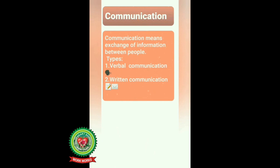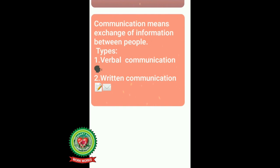Communication has two types: verbal communication and written communication. Verbal communication is when you are talking to your parents, grandparents, or friends through mobile phone, video call, or face-to-face — that is verbal communication. Written communication is when you are sending messages, ideas, or thoughts through letters, email, or text messages — this is the written form of communication, that's why it's called written communication.